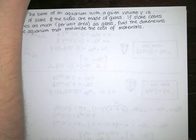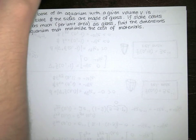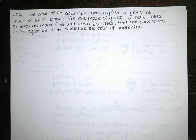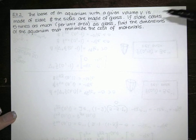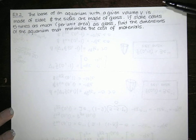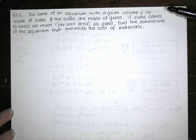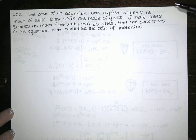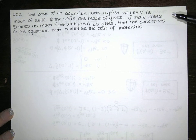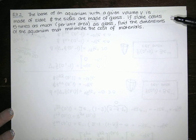Let's look at this problem statement and solve it. It says: the base of an aquarium with a given volume is made of slate and the sides are made of glass. If the slate costs five times as much per unit area as glass, find the dimensions of the aquarium that minimize the cost of the materials.